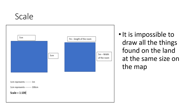So, if we draw this particular room using this kind of a scale, then 1 centimeter of the map represents 1 meter of the real length. That means 1 centimeter represents 100 centimeters of the real length. Then, the ratio can be stated as 1 is to 100. So, the scale of this map is 1 is to 100.